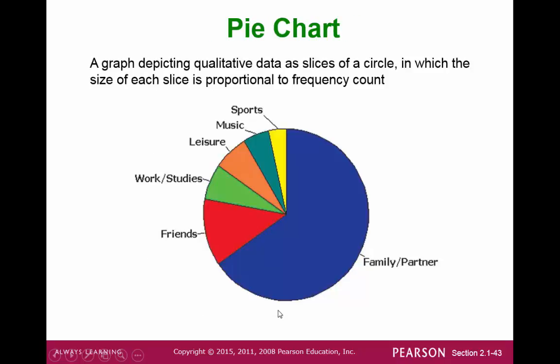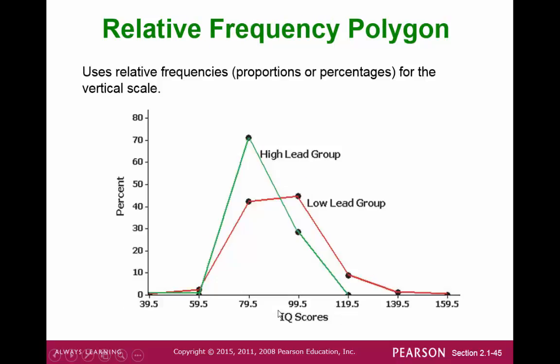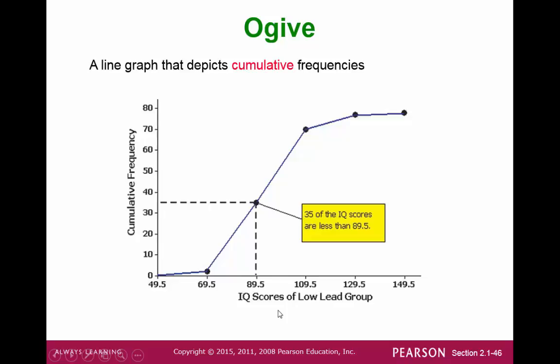A pie chart is a frequency graph that separates data out of 100%. A frequency polygon uses line segments to connect the points of each of these frequencies. A relative frequency polygon is the same, except we're looking at relative frequencies. And an ogive connects the dots of cumulative frequencies.